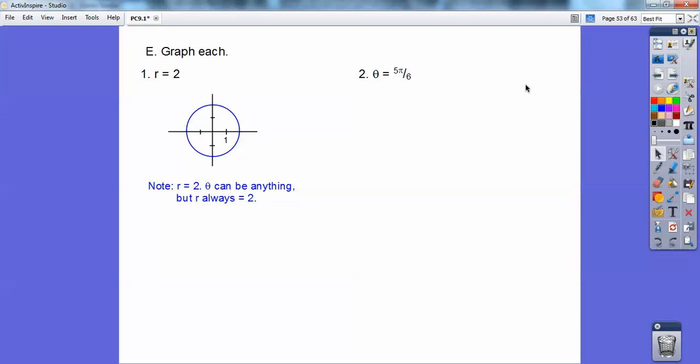Graph angle of 5 pi. This means your radius can be positive or negative, so there's the angle 5 pi with positive or negative. r can be any positive or negative right there, but the angle is 5 pi over 6, sorry.